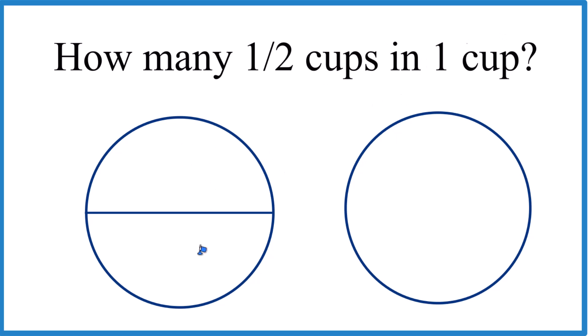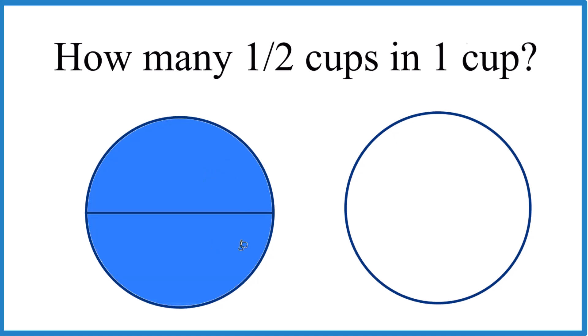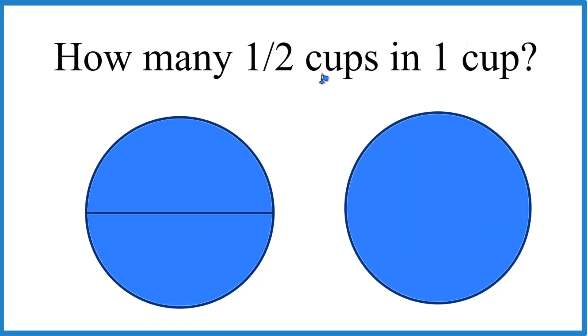Here we have one, two. So two parts to our circle here, that's 1/2 cup. And you can kind of see that if we have two of these here, that's a full cup. So it takes two 1/2 cups to make a full cup.